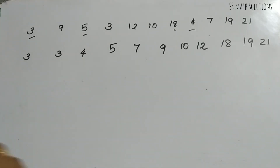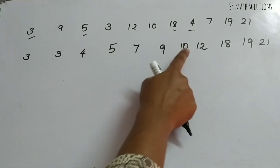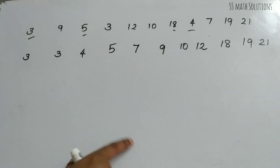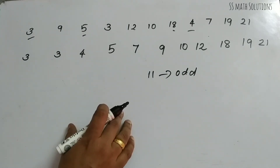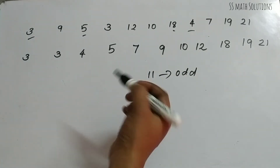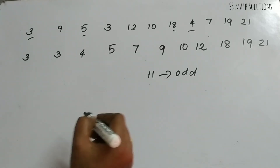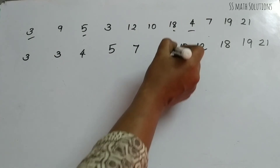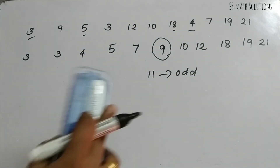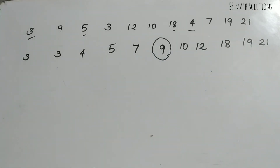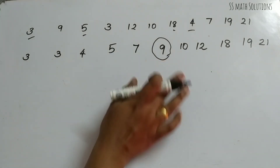Now check the median value. The number of observations is 11, which is odd. For an odd number of observations, the median is the (n+1)/2 th observation. So (11+1)/2 = 12/2 = 6th observation. Counting to the 6th position in our arranged data: 3, 3, 4, 5, 7, 9 — so the 6th observation is 9. Our median M = 9.